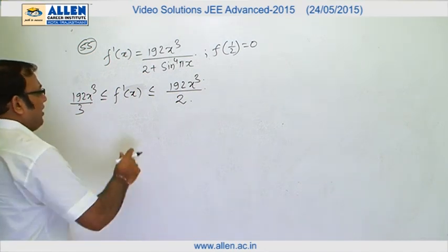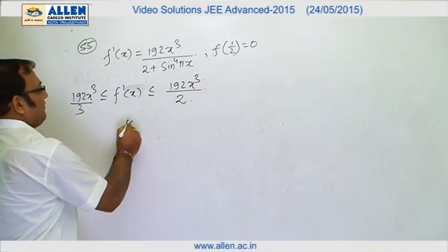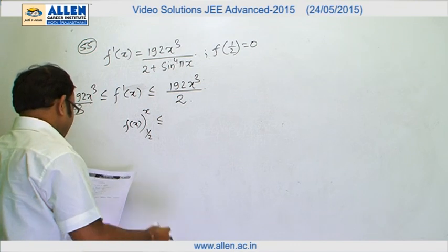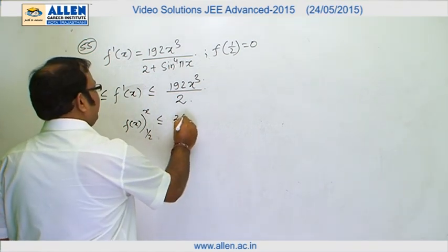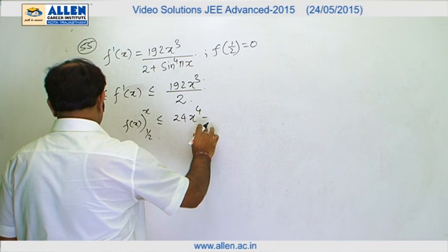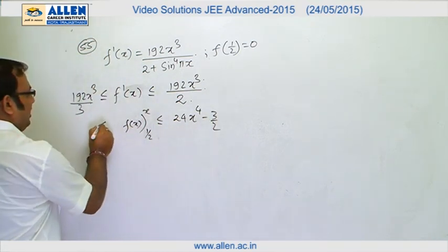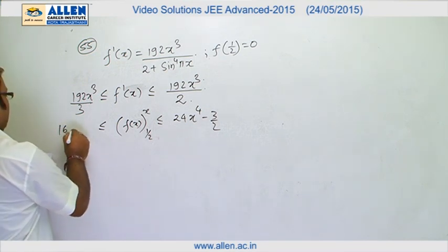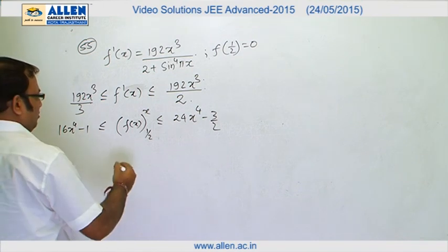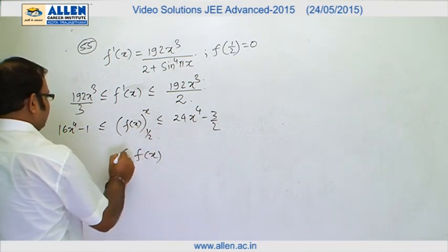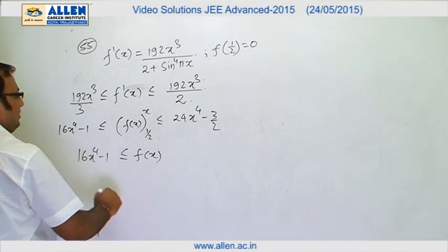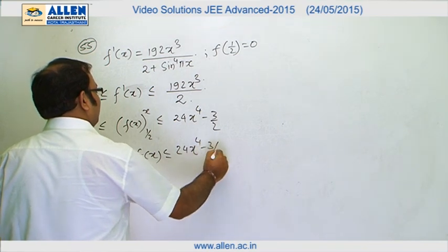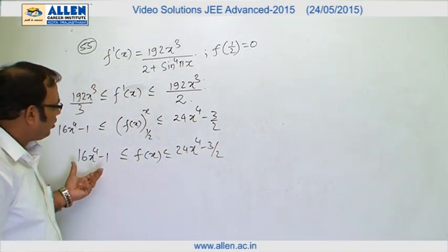Now if we integrate the entire inequality from 1/2 to x, the middle term becomes f(x) evaluated from 1/2 to x. After computation, the upper bound gives 24x⁴ - 3/2 and the lower bound gives 16x⁴ - 1. Putting in the limits, we get f(x) ≥ 16x⁴ - 1 and f(x) ≤ 24x⁴ - 3/2.